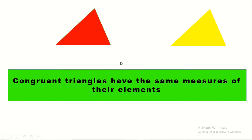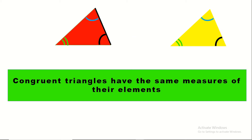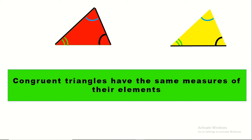We may see them rotated, but if we flip one and place them on each other, one covers the other — they are the same shape. So when do we say that two triangles are congruent? Two triangles are congruent when they have the same measures for all of their elements: their angles and their sides. A triangle has three angles and three sides, and congruent triangles have the same measures for all of them.